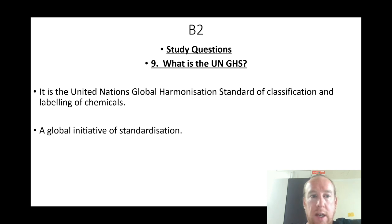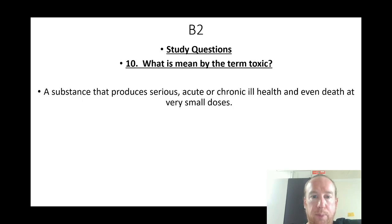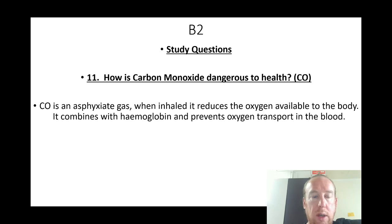What is the UNGHS? It is the United Nations Global Harmonization Standard of classification and labelling of chemicals — a global initiative of standardization. What is meant by the term toxic? A substance that produces serious acute or chronic ill health and even death at very small doses. How is carbon monoxide dangerous to health? It is an asphyxiant gas; when inhaled it reduces oxygen available to the body by combining with haemoglobin and preventing oxygen transport in the blood.